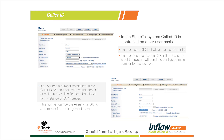Some customers want their cell phone number to be their caller ID. For example, in the real estate market, you may want customers calling your cell phone rather than your desk. When you place an outbound call, you can actually spoof your cell phone number as the outbound calling number.